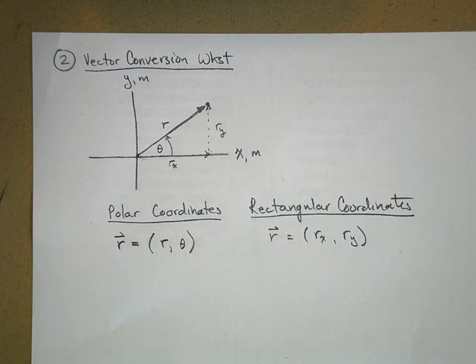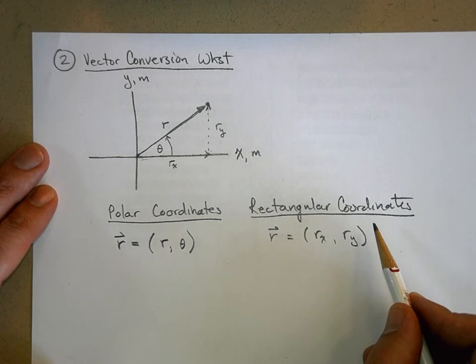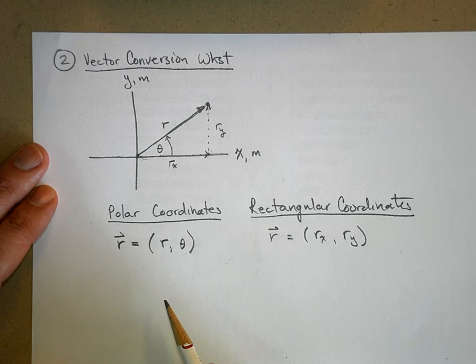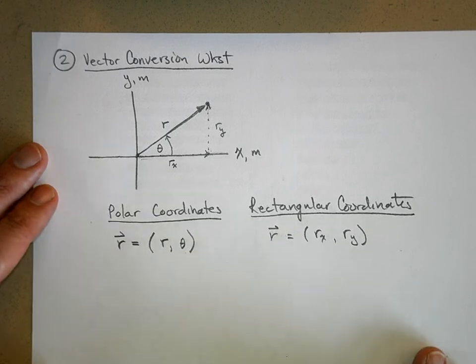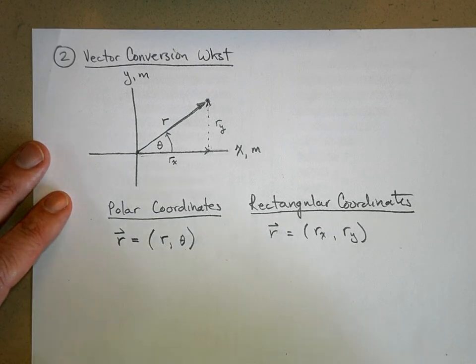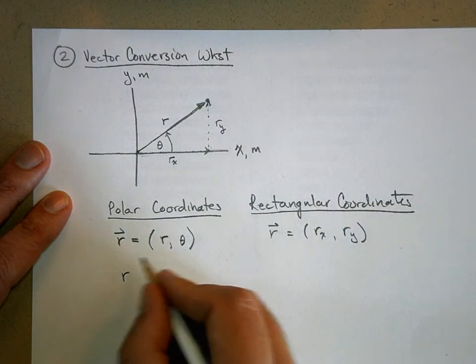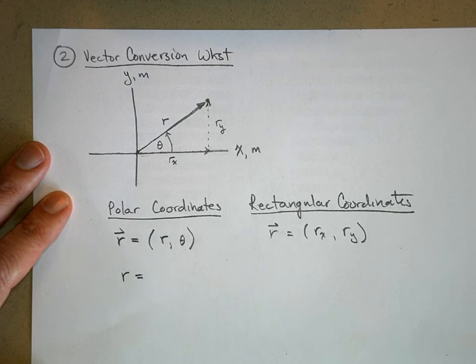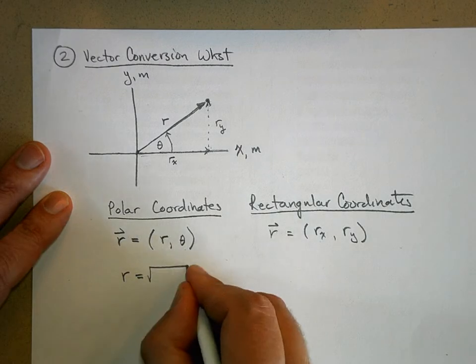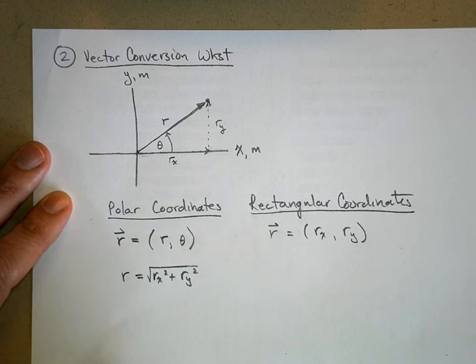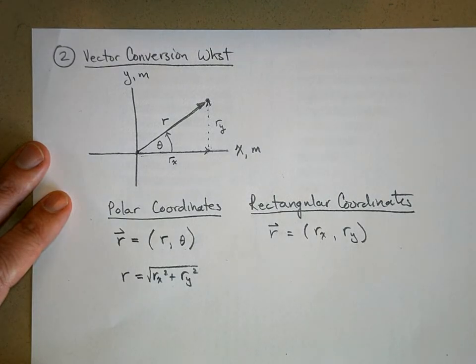Now, what if I give you the x components, and I want to calculate what the polar coordinates are? Well, I use just what we did in the last assignment. If I give you r x and r y, and I want to express r and theta, I would use this. r equals the square root of r x squared plus r y squared. That is, I just used Pythagorean theorem.